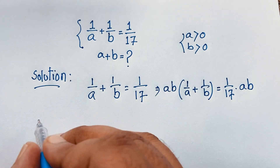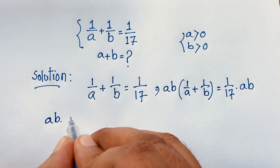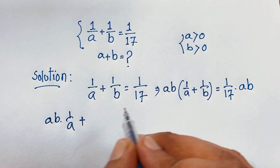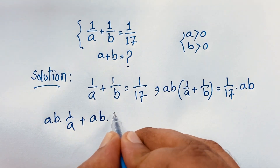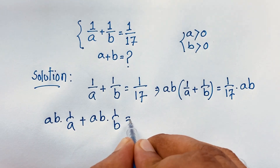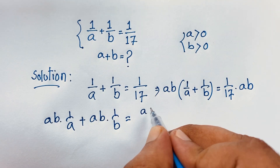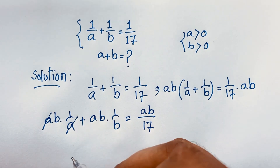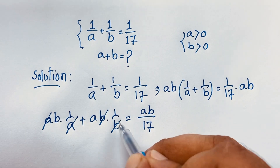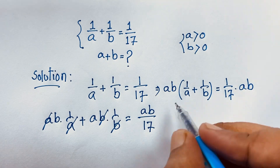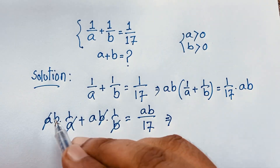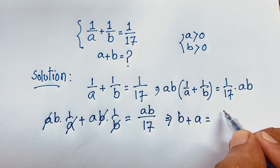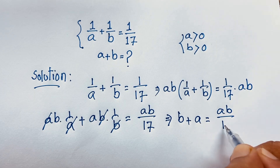Now this expression expands: AB times 1 over A, plus AB times 1 over B. This A cancels with this A, and this B cancels with this B. We are finding out here: B plus A is equal to AB over 17.